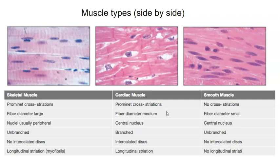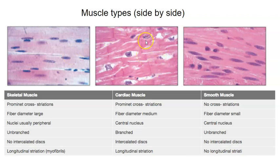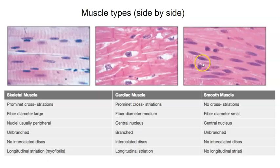In summary: for skeletal muscle, look for long cylindrical multinucleated cells with nuclei at the periphery and clear striations. For cardiac muscle, look for branching cells with intercalated discs and a single nucleus. For smooth muscle — the most challenging — note there are no striations, there's one nucleus usually toward the center of the cell.